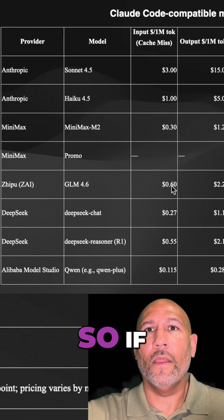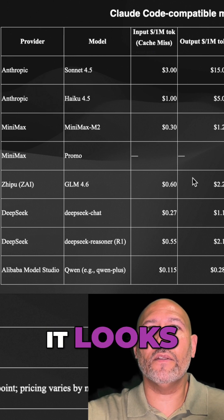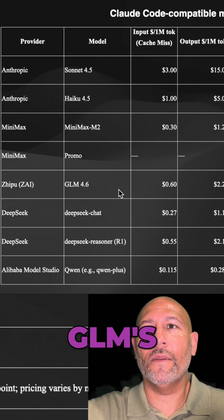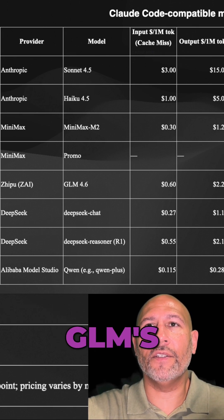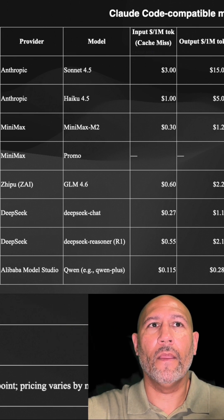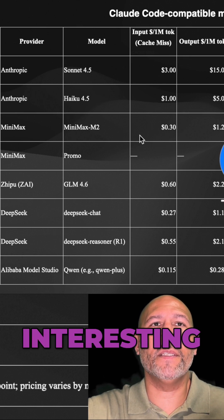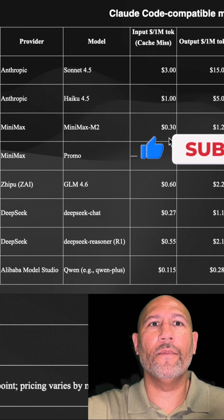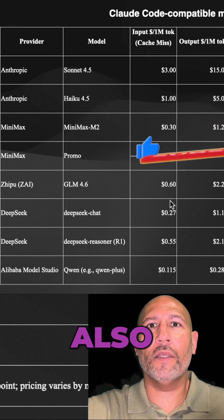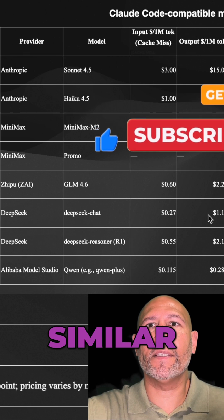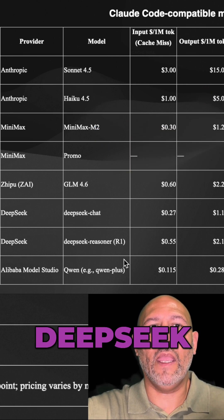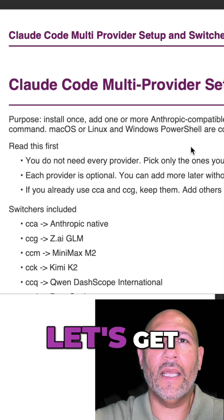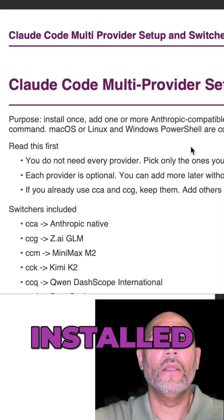So if you're looking at API costs, MiniMax M2 is coming in cheaper than GLM, but if you're going with GLM's coding plans, GLM is going to come in way cheaper. It will be interesting to see if MiniMax M2 comes up with a similar plan. You can also see how it compares to DeepSeek — pretty similar pricing — and the Qwen models as well.